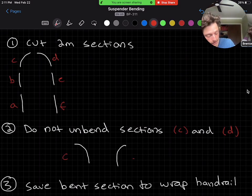Here I've drawn sections C and D. Do not go ahead and unbend those to straight just to bend them again. We want to save that bent section.